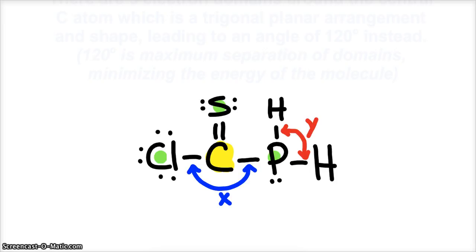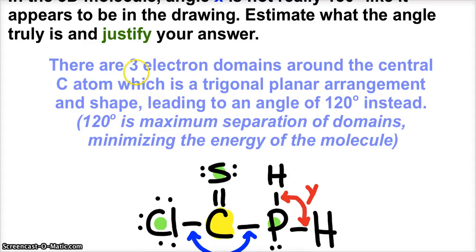And so you should know and remember that a 3-electron domain positioning is trigonal planar arrangement. So the 3 electron domains around the central carbon atom is a trigonal planar arrangement and shape because there's no lone pairs affecting the electron geometry, affecting the shape of the molecule. Now here, it asks us to estimate what the angle truly is. And so here, we do need to mention that we know that it's a 120-degree bond angle difference in a trigonal planar situation.